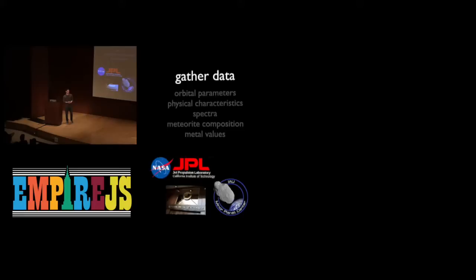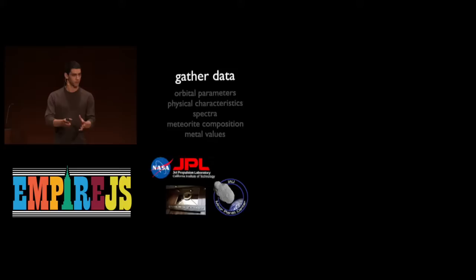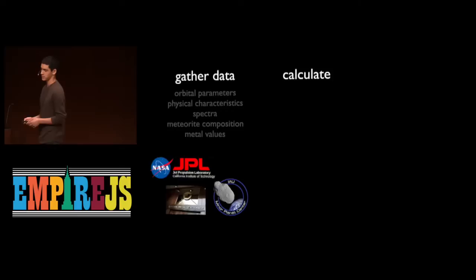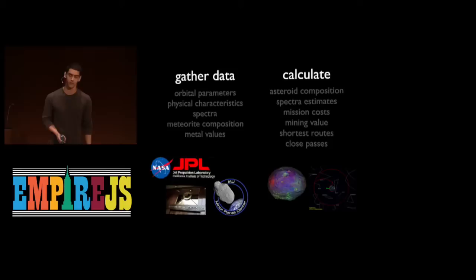Some background on how Asterank actually works. The first step is to gather data from places like NASA JPL, the Minor Planet Center, about a dozen other scientific sources, as well as economic sources like the London Metals Exchange. I bring it all into a database and put it into what I call my unified data model — one ground source of truth containing everything we know about asteroids. Next, I run calculations: functions mapped over each asteroid estimating things like composition, mission cost value, how hard it is to get to an asteroid, how much rocket fuel you need, and I put it all together.